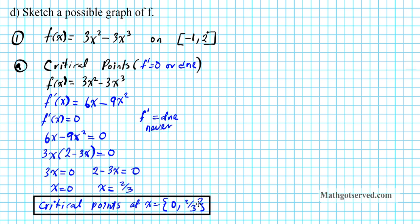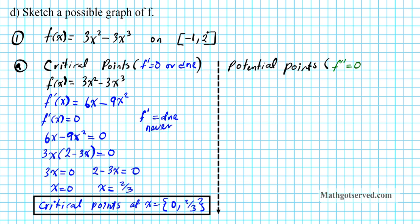Now the second part of part A: we also have to find potential points of inflection. You have to be careful — it's called potential for a reason. To find potential points of inflection, we find where the second derivative f'' equals zero. Note that f'' = 0 does not automatically mean it's a point of inflection; the concavity must actually change sign.